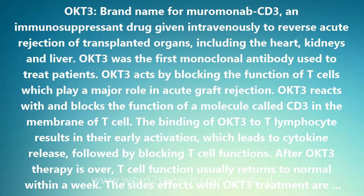OKT3 acts by blocking the function of T cells, which play a major role in acute graft rejection. OKT3 reacts with and blocks the function of a molecule called CD3 in the membrane of T cells. The binding of OKT3 to T lymphocytes results in their early activation, which leads to cytokine release, followed by blocking T cell functions.